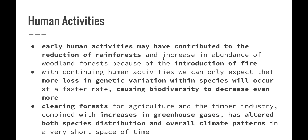Early human activity may have contributed to some of these changes, such as the reduction of rainforests and the increase in the abundance of woodland forests because of the introduction of fire. Aboriginal Australians used fire quite a lot in their land management — setting fire to particular areas in order to rejuvenate them and get new growth happening — which led to the evolution of fire-resistant plant species. In general, biodiversity has decreased in Australia during this movement northward, and we can only expect more loss in genetic variation as human activities change the environment at a more rapid rate.